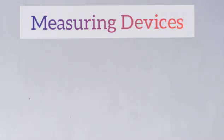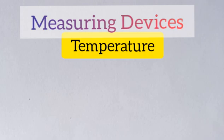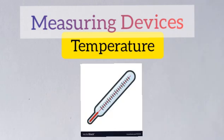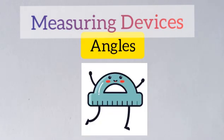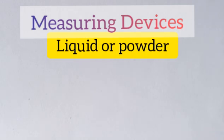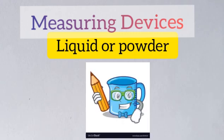Next we have the instrument used to measure temperature, which is the thermometer. Then we have the instrument used to measure angles, which is the protractor. Then the instrument used to measure liquid or powder is the measuring cups.